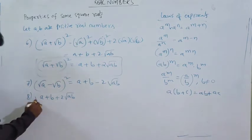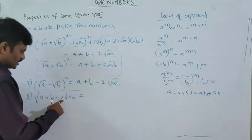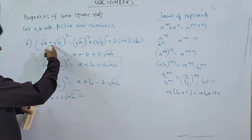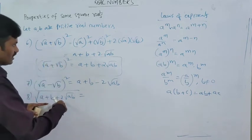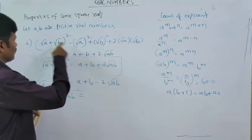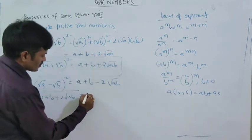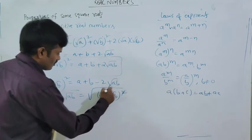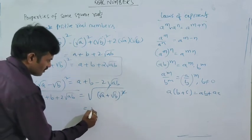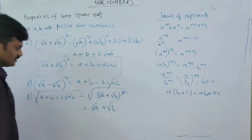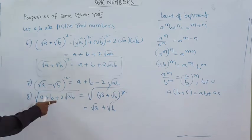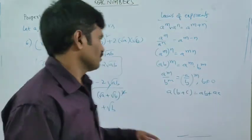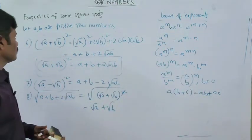Now, going in reverse: what is the square root of A plus B plus 2 root AB? We derived in the sixth property that root A plus root B whole square equals A plus B plus 2 root AB. So the square root of A plus B plus 2 root AB equals the square root of root A plus root B whole square. The square root and the square cancel, leaving root A plus root B. This is how we derive formulas, and these are some of the properties related to square roots.